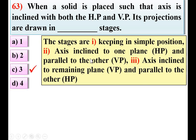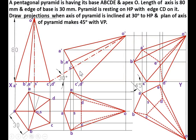I will show you one problem solution so you can understand these three stages easily. Here the pentagonal pyramid is inclined 30 degrees to HP and 45 degrees to VP. In the first stage the axis is perpendicular to HP; in the second stage it is inclined to HP; and in the third stage it is inclined to VP. So three stages are required when it is inclined to both HP and VP.